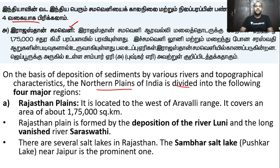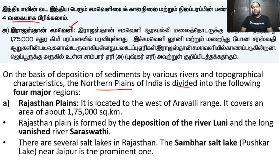The four divisions are: Rajasthan Samovali, Punjab-Haryana plains, Ganga plains, and Brahmaputra plains. Rajasthan is in the eastern part, and the Rajasthan desert type is also in the eastern part.